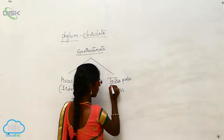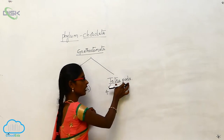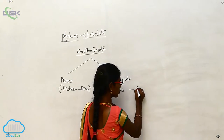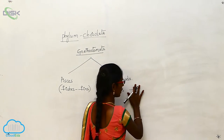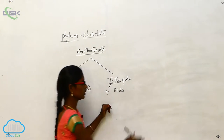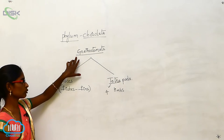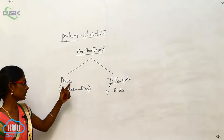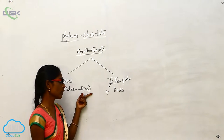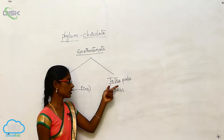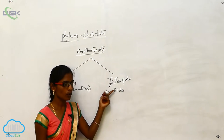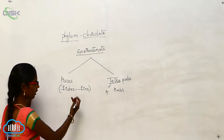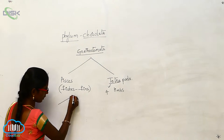Tetra means four. These tetrapods have four limbs — that is, two legs and two hands. Gnathostomata includes Pisces and Tetrapods. Pisces includes fishes, which have fins. Tetrapods have four limbs.